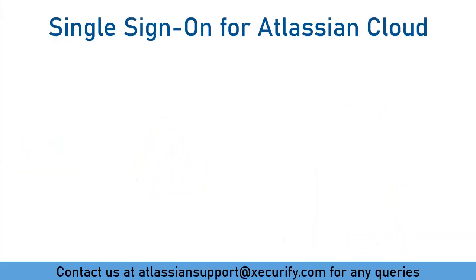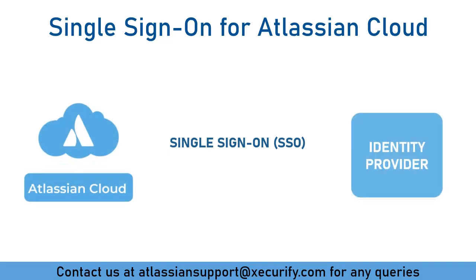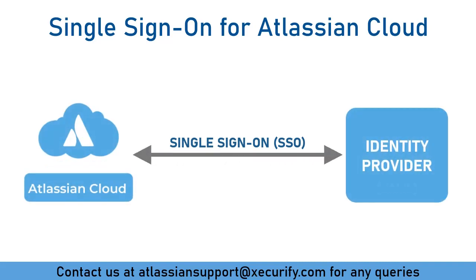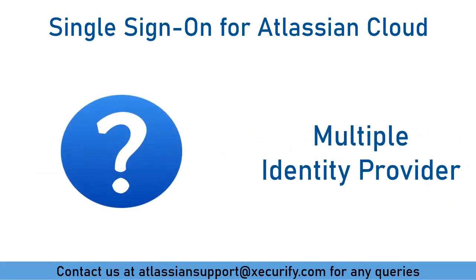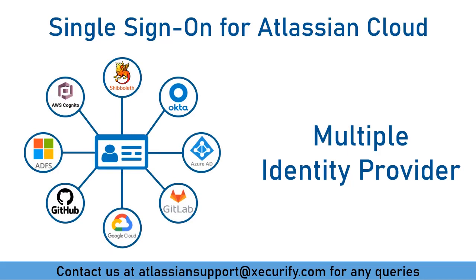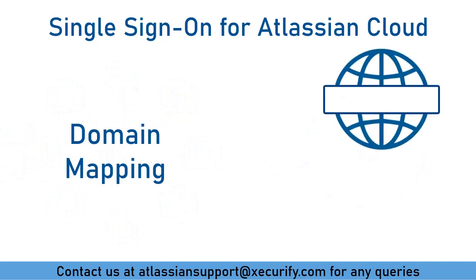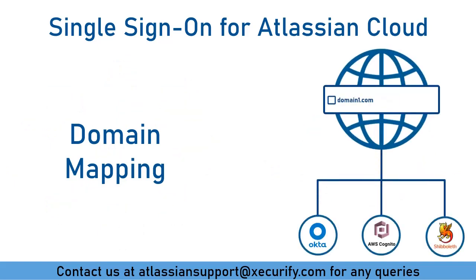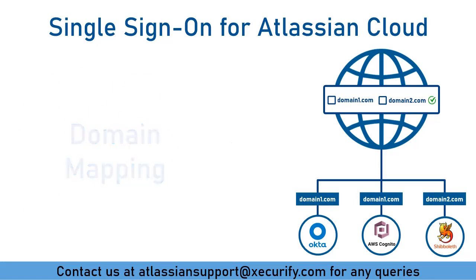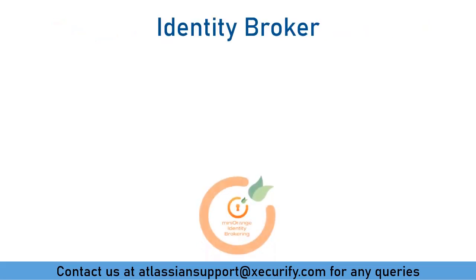We can configure SSO for Atlassian Cloud using a single identity provider that supports SAML SSO protocol. But what if we want to configure authentication with more than one identity provider that may support SAML or any other protocols? What if we want to force redirect users to different IDPs based on their email or username domain? Yes, we can achieve this use case by using Minirange Identity Broker service.